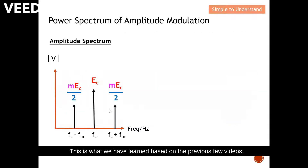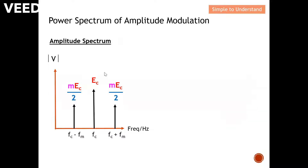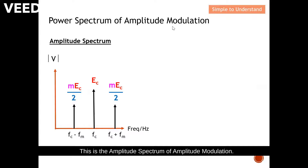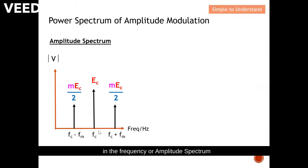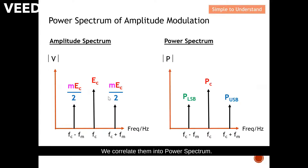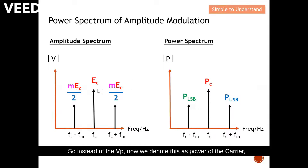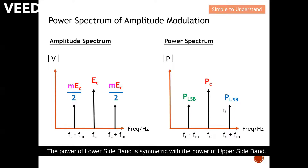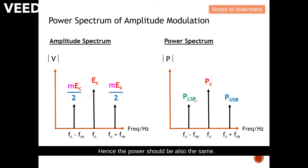This is what we learned in the previous video — this is the amplitude spectrum of amplitude modulation. There are three components, as you can see from this diagram. In the frequency or amplitude spectrum, we correlate them into the power spectrum. From the power spectrum, there are also three components: instead of Vp, we now denote them as the power of the carrier, power of the lower sideband, and power of the upper sideband. The power of the lower sideband is symmetric with the power of the upper sideband, so they have exactly the same amplitude and hence the same power. Now we are going to learn how to describe this power.